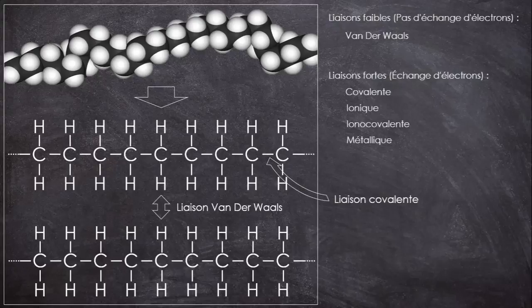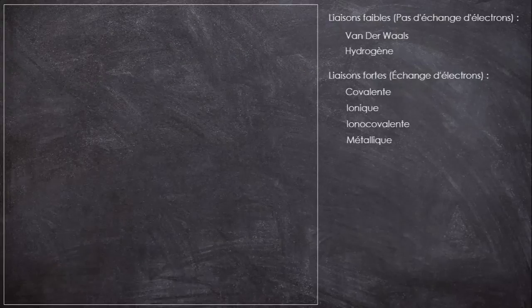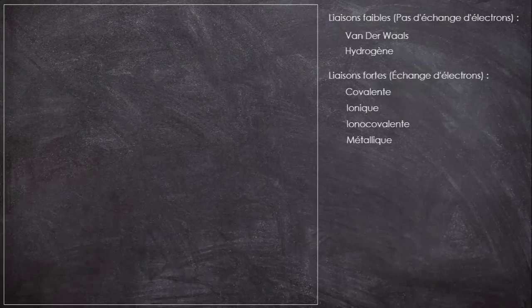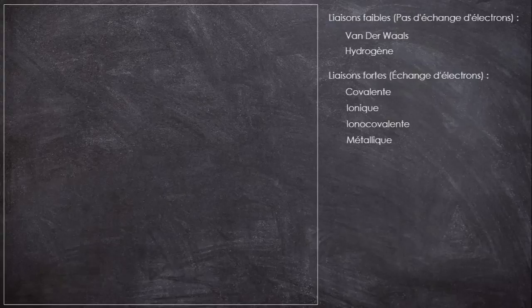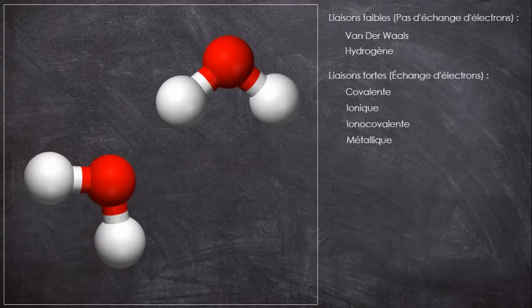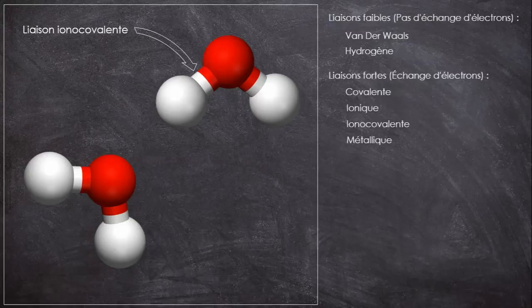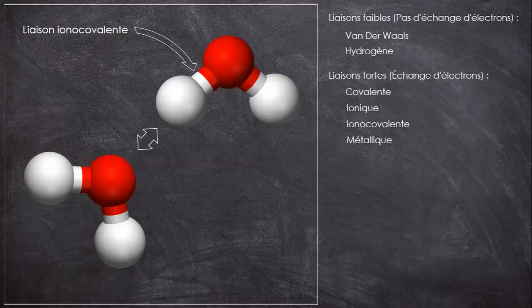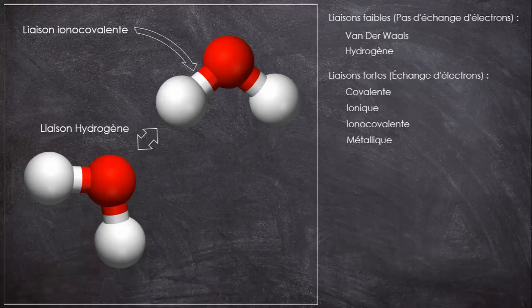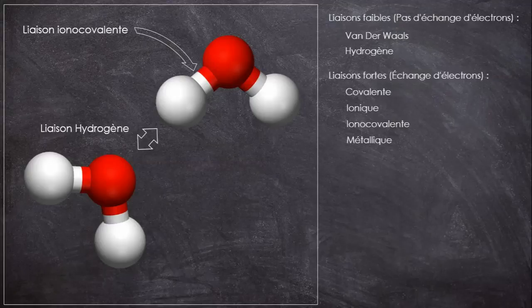Il existe un dernier type de liaison, la liaison hydrogène. On la retrouve dans quelques plastiques, comme les nylons ou le Kevlar, mais aussi entre les molécules d'eau. Même si l'hydrogène est lié de façon covalente à l'oxygène de sa molécule avec qui il partage donc un électron, il est aussi attiré par l'oxygène des molécules alentours, car l'oxygène est très électronégatif. C'est une liaison plus intense et plus forte que la Van der Waals, mais on reste dans le domaine des liaisons faibles, car encore une fois, il n'y a pas d'échange d'électrons.